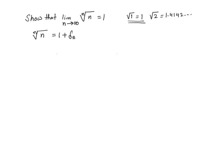Because for n greater than or equal to 2, the nth root is greater than 1. So now we can do that. If I raise the power to n on both sides, I get n is equal to 1 plus delta n to the power n.